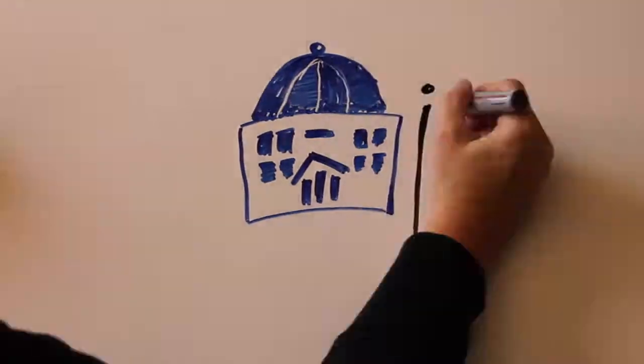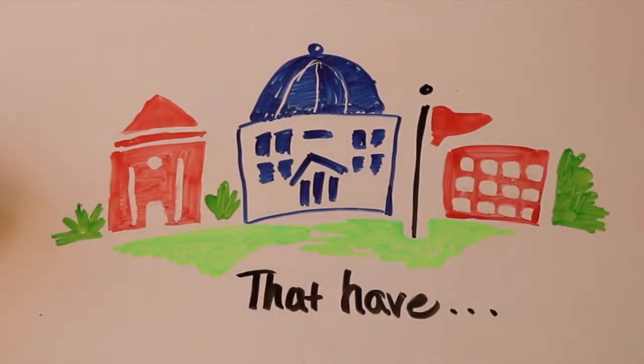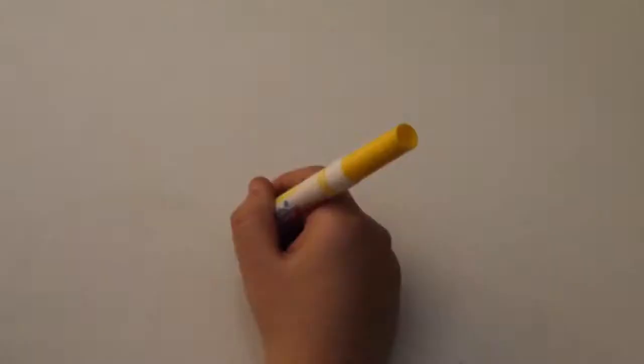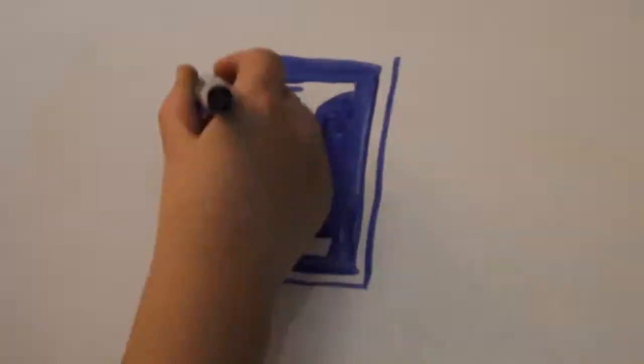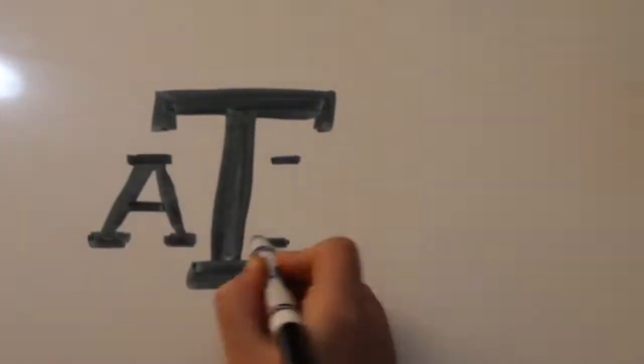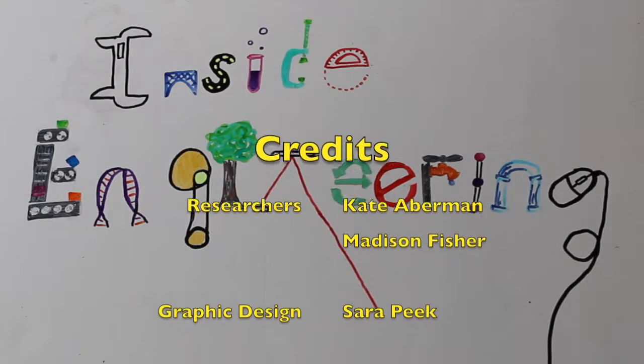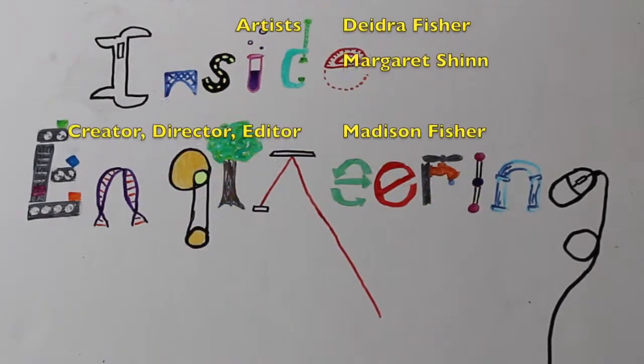Engineering schools that have biological and agricultural engineering are Purdue University, Cornell University, Iowa State University, the University of Illinois Urbana-Champaign, and Texas A&M. The world will always need more engineers because our world will never stop developing and innovating.